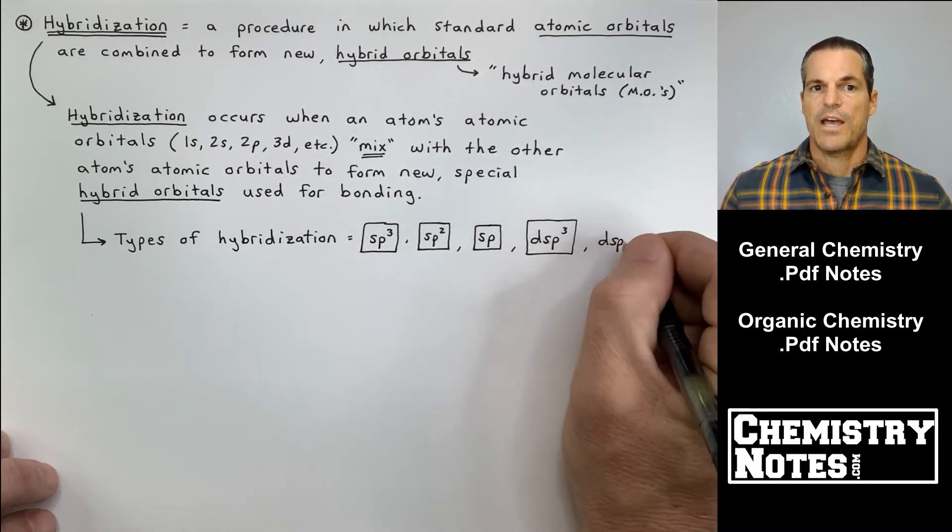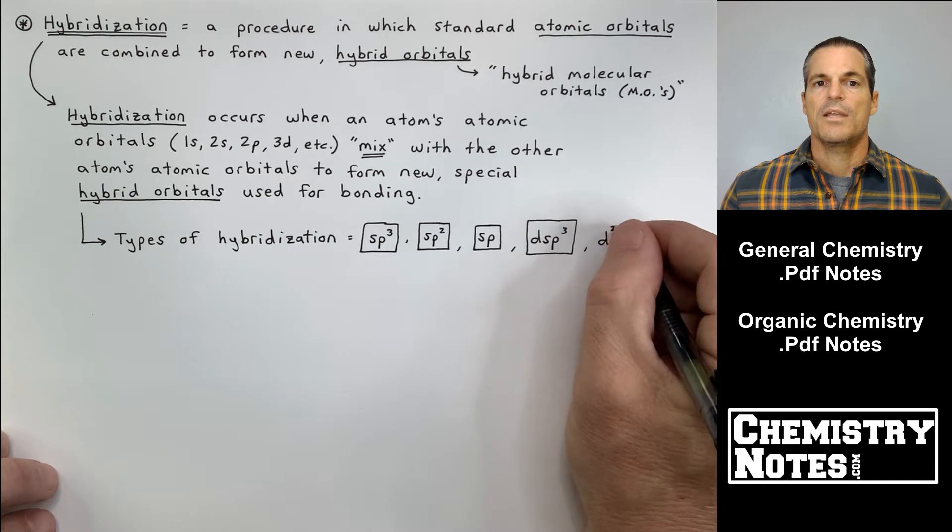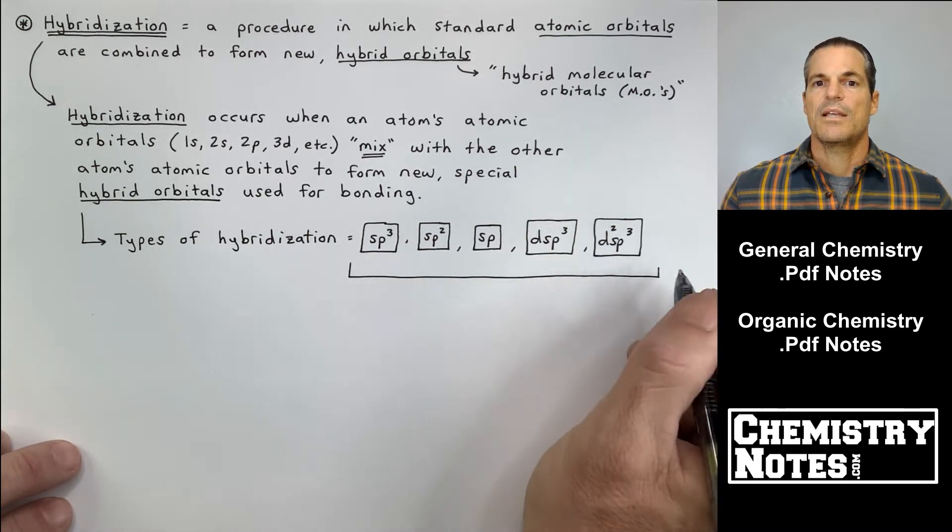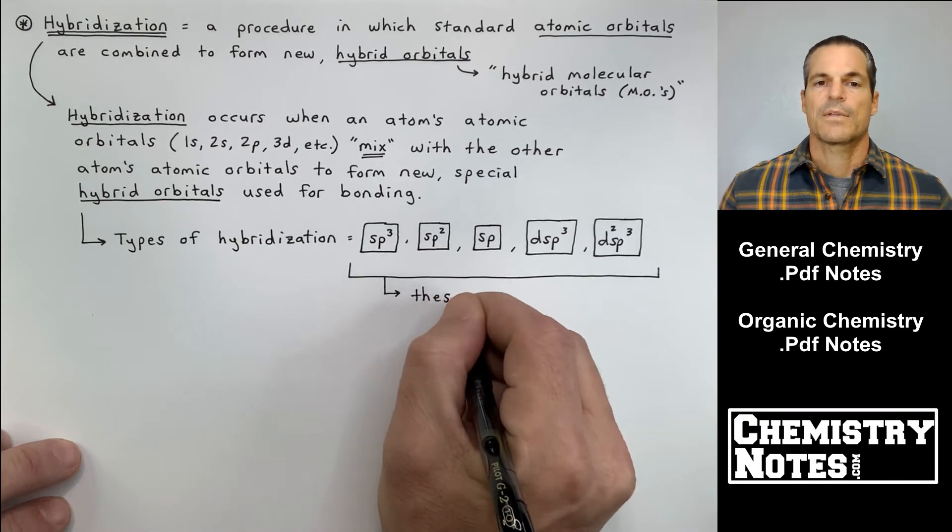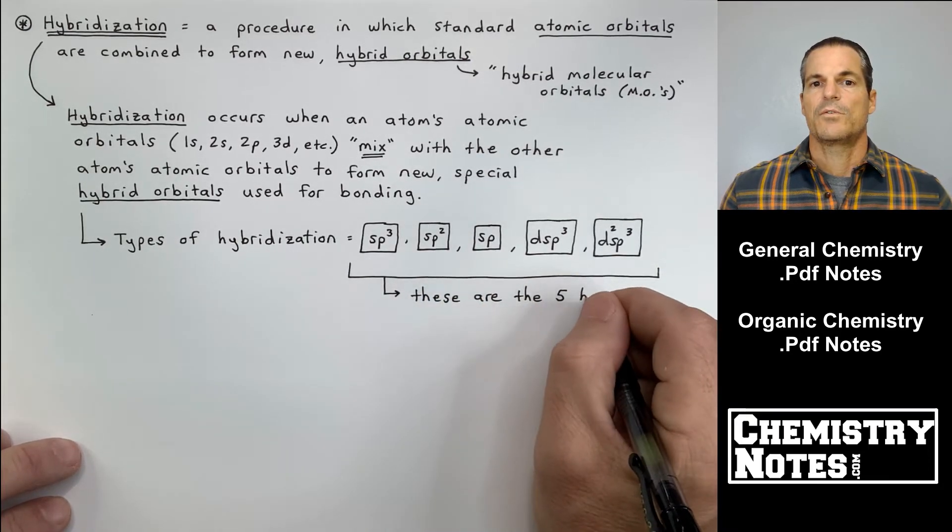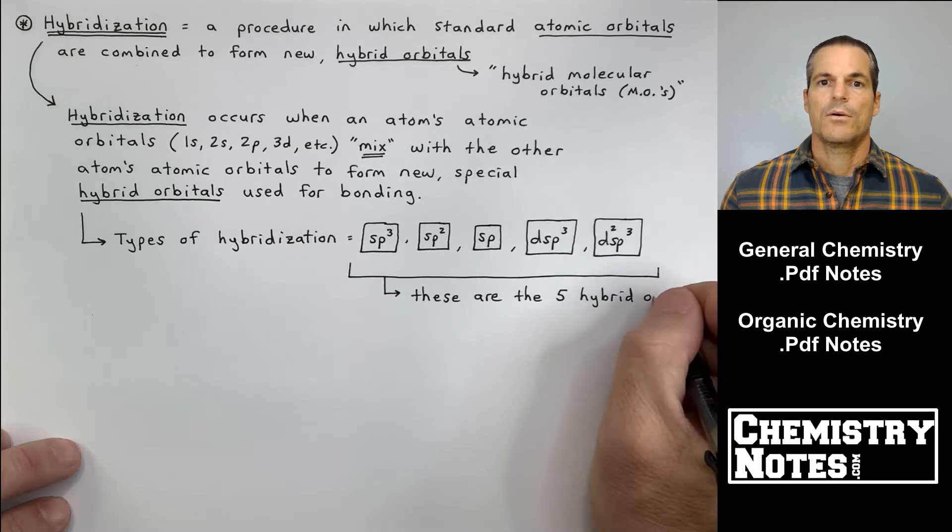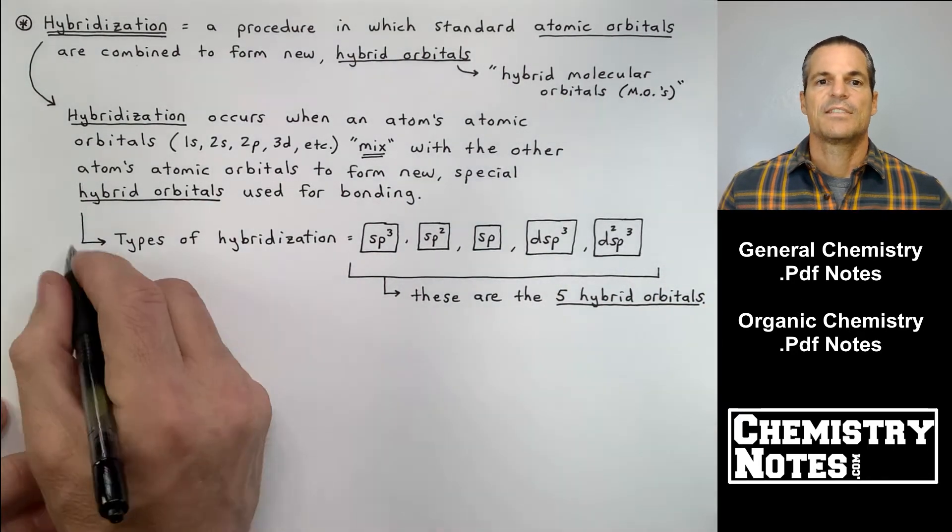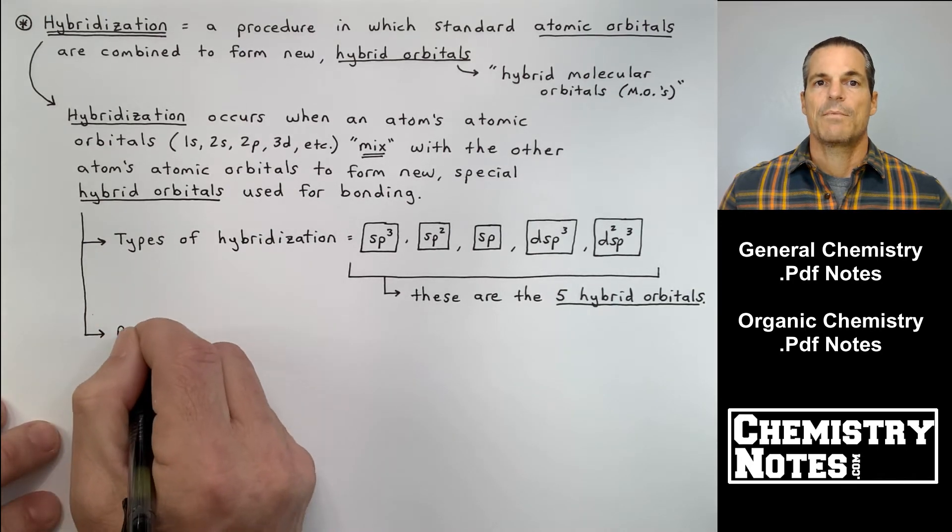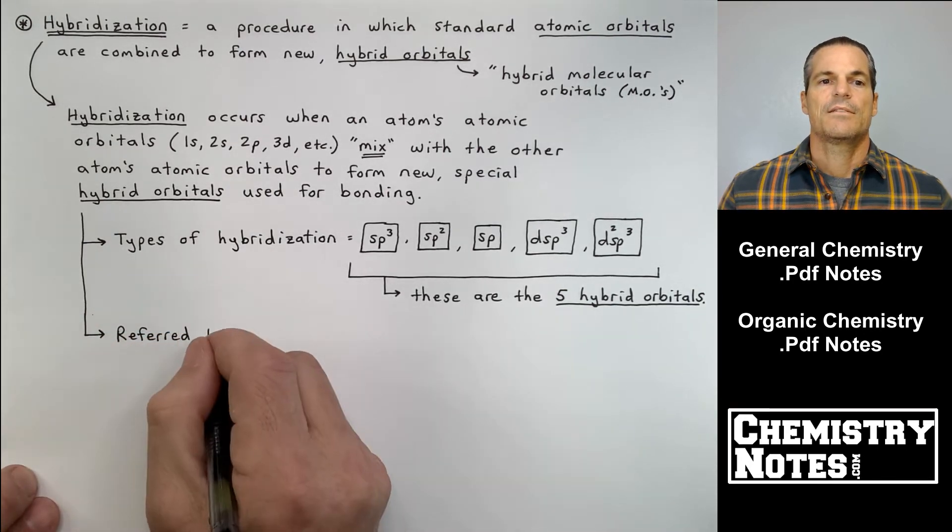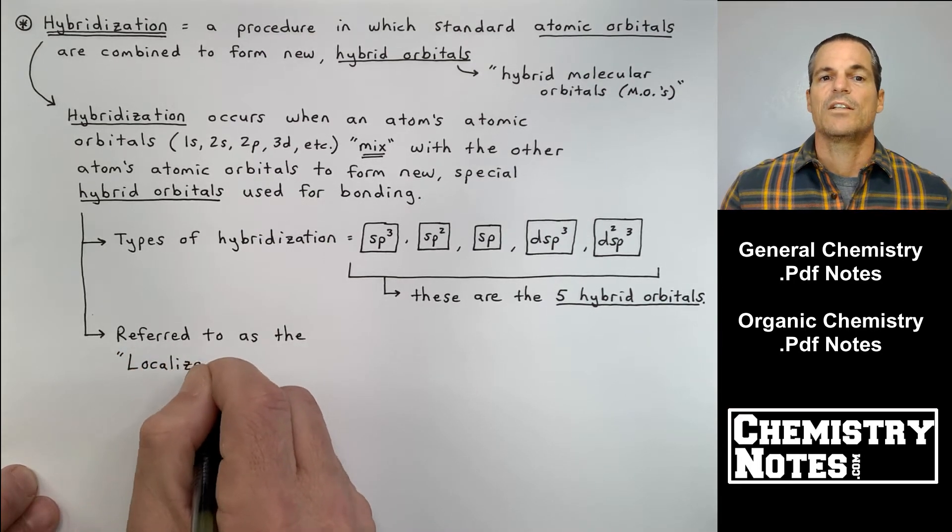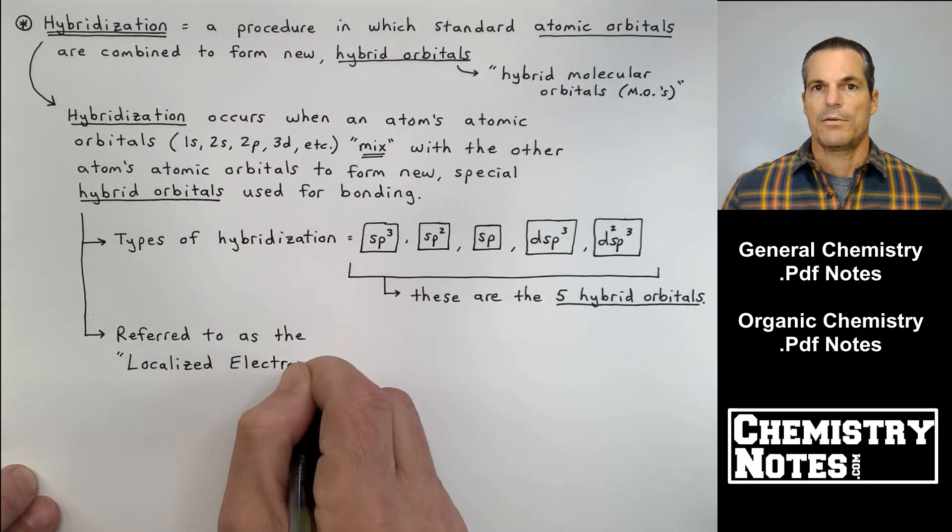There are five types of hybridization: sp3, sp2, sp, dsp3, and d2sp3. Sometimes those last two are referred to as sp3d and sp3d squared, but it's the same thing. So those are the five hybrid orbitals. This entire process I'm talking about is referred to as the localized electron model.